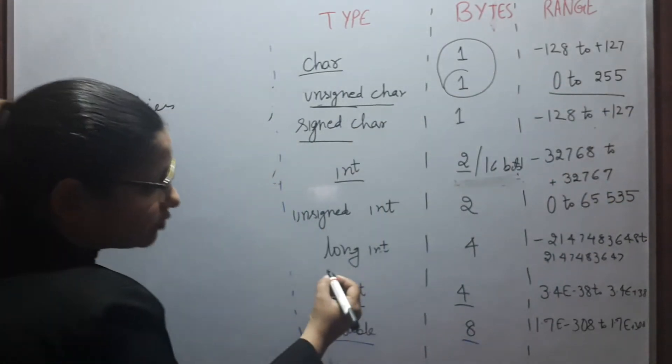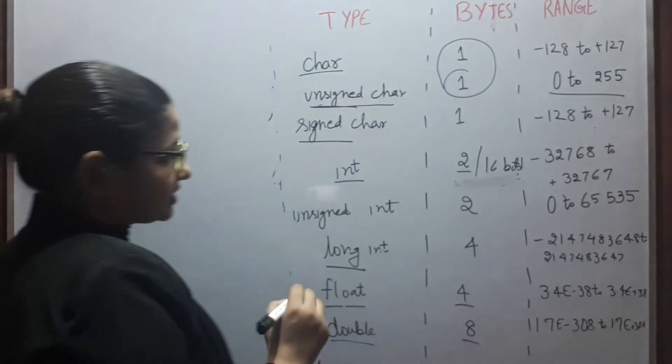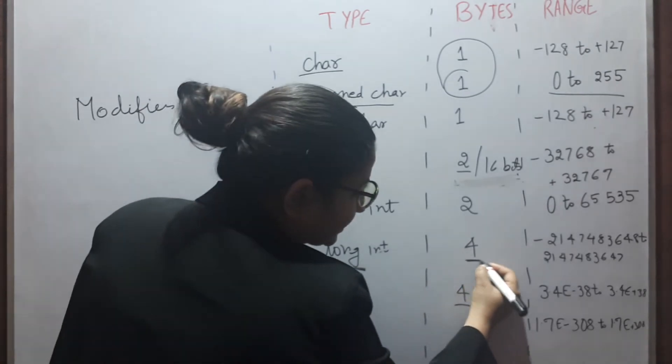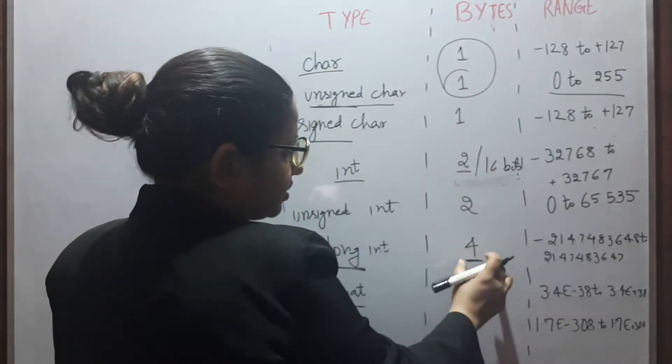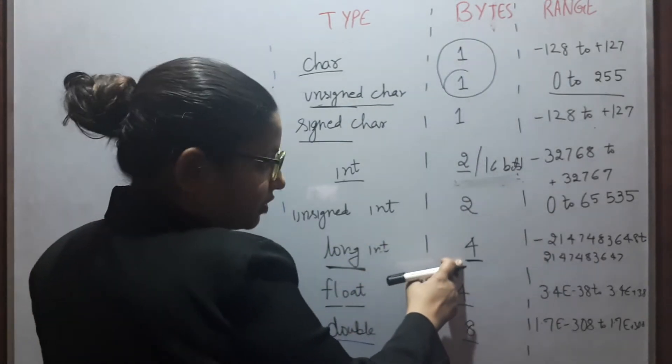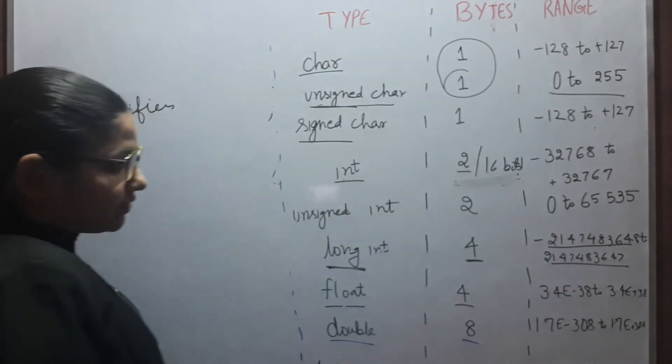We can have long integer. As we know, it is of 2 bytes. But if you make long int, then it becomes 4 bytes. So the memory requirement or byte size is increasing. So it has become 4 bytes. Similarly, range is also increased.